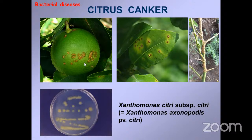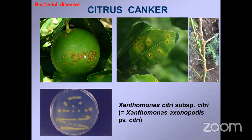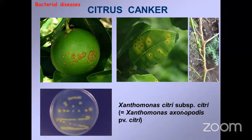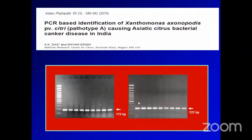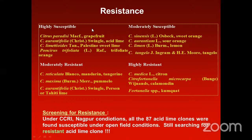First and foremost is citrus canker — wherever bacterial infection is present, water soaking appears along with the lesion, visible especially in the initial phases on acid lime fruit. The causal bacterium is Xanthomonas citri subsp. citri (recently renamed, having undergone several taxonomic and nomenclature changes). Molecular PCR-based identification has been conducted. Most acid lime cultivars are the most susceptible, along with grapefruit (Citrus paradisi) and Citrus aurantifolia. Resistant groups include calamondin and certain citron cultivars. Unfortunately, all 87 acid lime clones in our collection were found susceptible — the search for resistant acid lime clones continues.